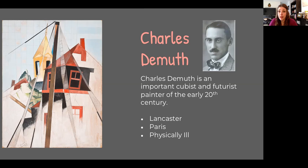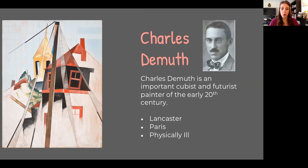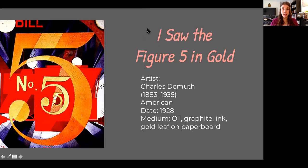Charles DeMuth is a famous artist who is important to both Cubism and Futurism — he was kind of the intersection of both art movements. He was a painter who knew and interacted with a lot of artists. He grew up in Lancaster and did study art in Paris for a little while. One of the things that really impacted his art making was the fact that he was physically ill often in his life — similar to other artists like Andy Warhol or Toulouse-Lautrec, the reason they became artists is partly because they couldn't go out and work like most men of their day.